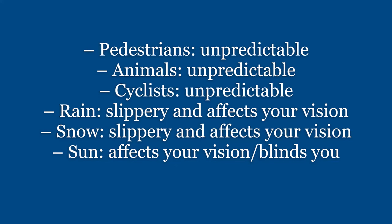Pedestrians, because they are unpredictable. Animals can be unpredictable — so dogs, cats, squirrels, crows, etc. Animals can run onto the road. Cyclists are also unpredictable.